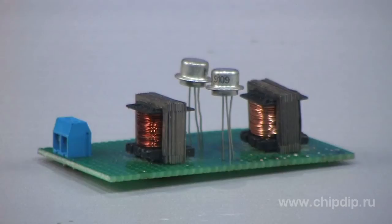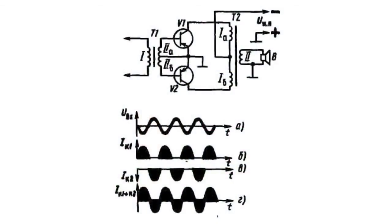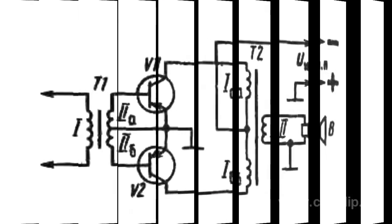We present the working principle of the amplifier through the simplified scheme of the two-stroke transformer output amplifying cascade.